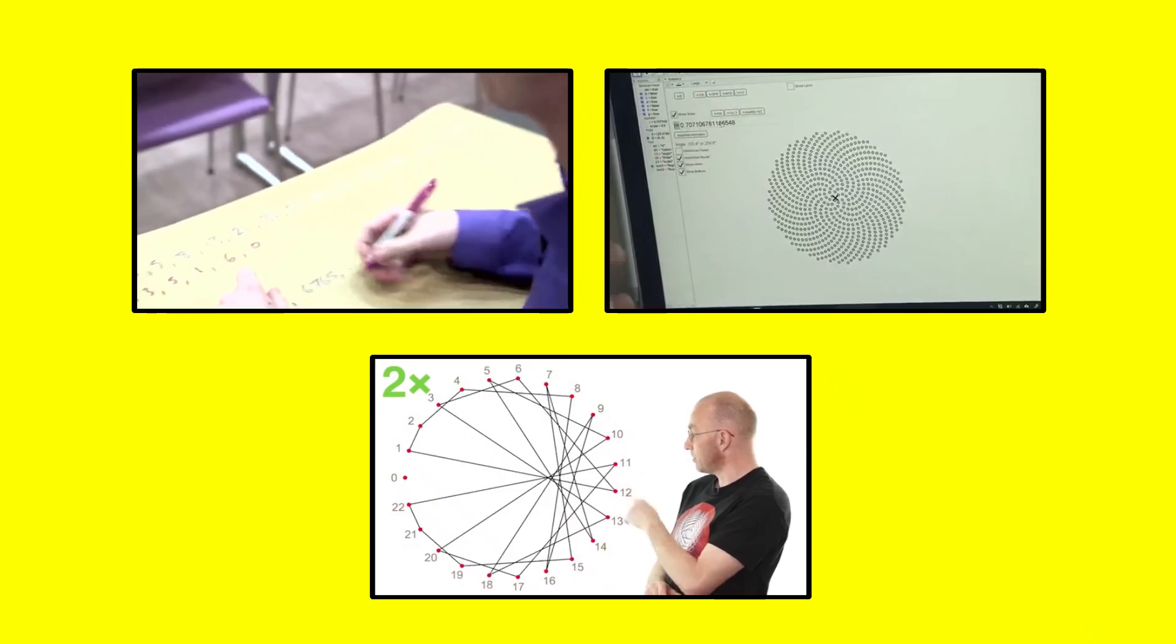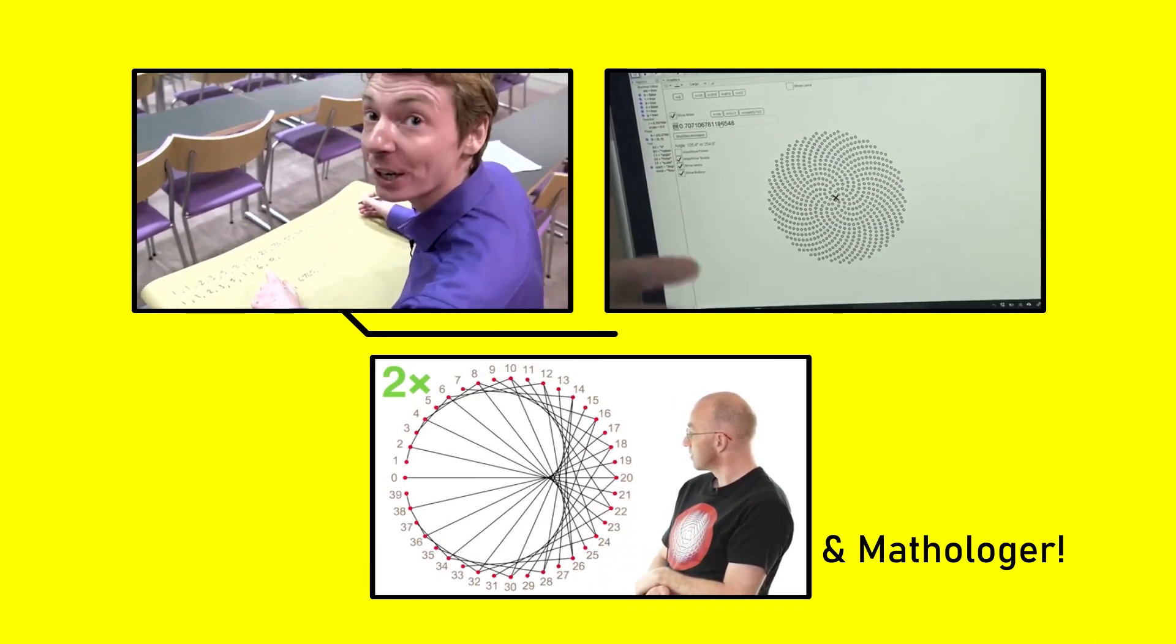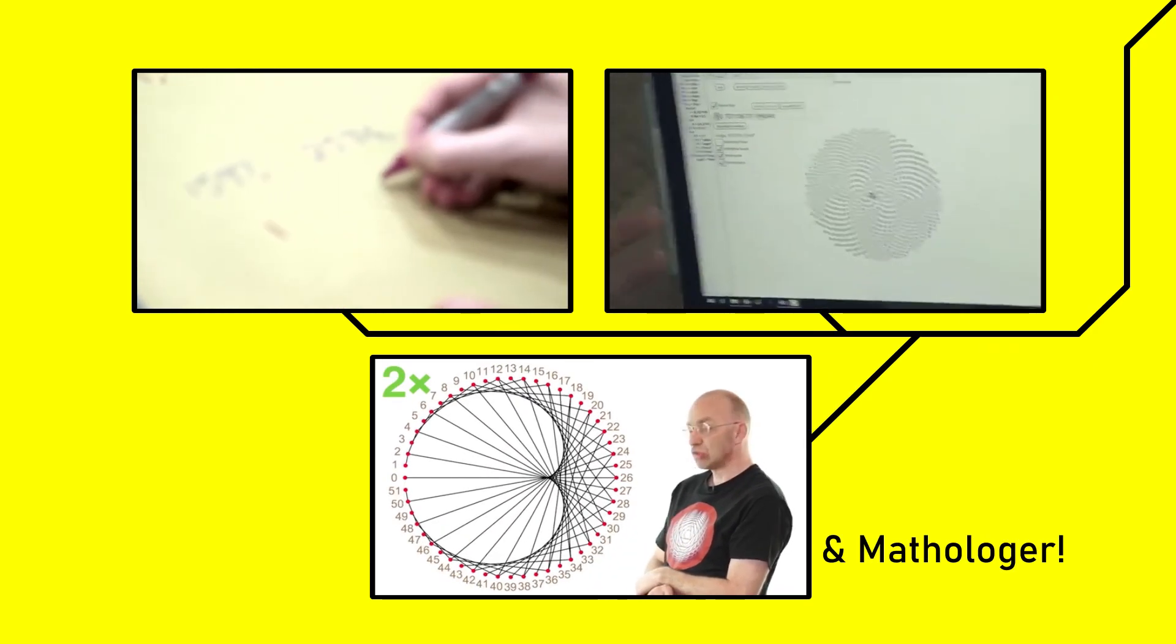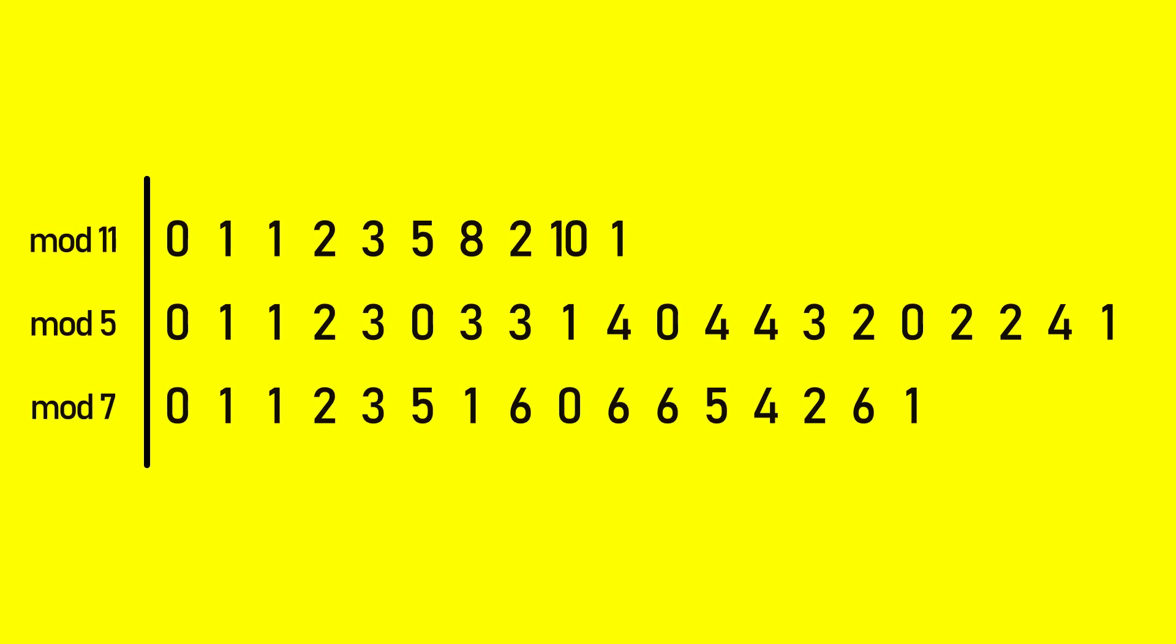However, during my research on these designs, which included watching a few great videos by the channel Numberphile, which you should totally check out for supplemental material, links are in the description, I picked up on the fact that each looping mod sequence contained either one, two, or four zeros.